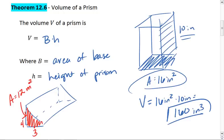Let's say the height is 9. So the volume would be 12 times 9, which gives us 108 meters cubed.